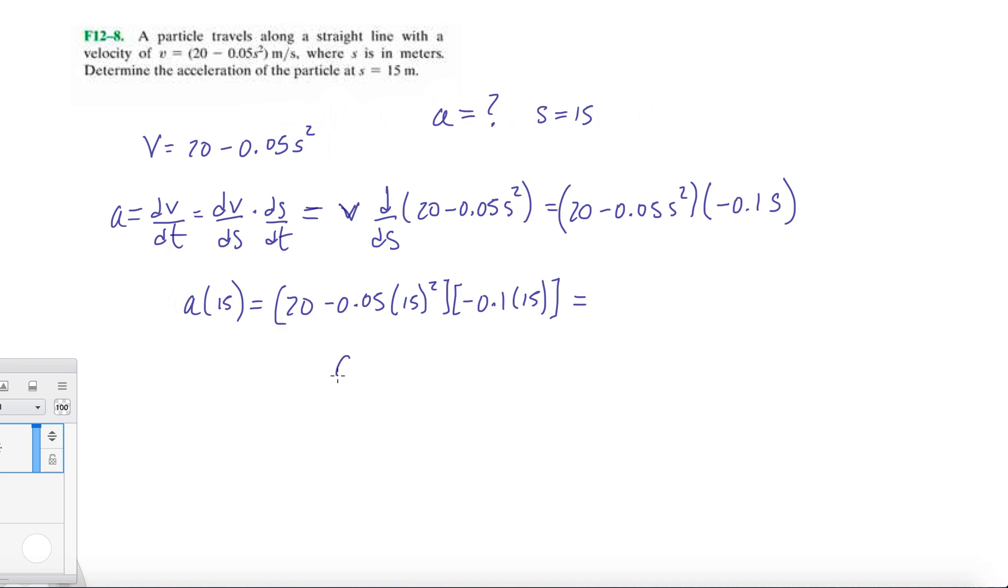So, a of 15 is minus 13.125 meters per second squared. So, yeah, make sure you're doing this correctly in your calculator, and then you should arrive at your answer. The main takeaway here is the chain rule. Remember, we can write the acceleration as dv/ds times ds/dt.